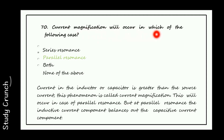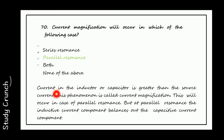Current magnification will occur in which case? It occurs in parallel resonance. The current through the inductor or capacitor is greater than the source current — this phenomenon is called current magnification. At parallel resonance, the inductive current component balances out the capacitive current component.